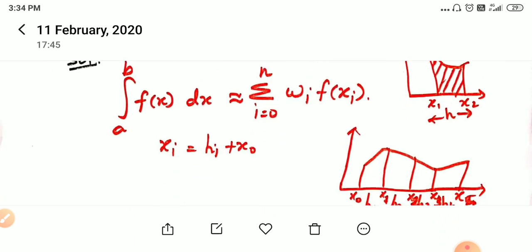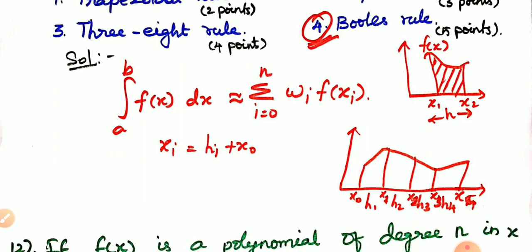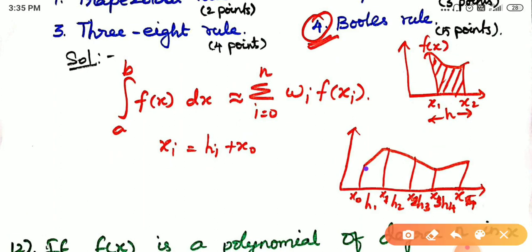This is a common formula: xi is equal to ih plus x0, where x0 is the starting point. H1, H2, H3, H4 represent the equal spacing. Equally spaced is mentioned in the question, so if you want to mention points, we use Boole's rule.